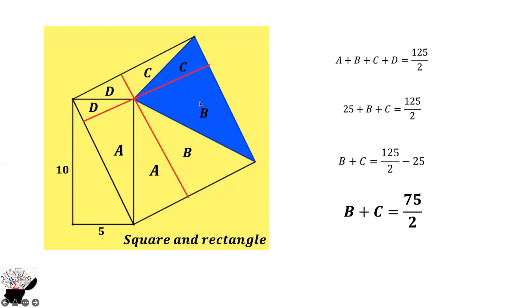So B + C = 75/2, and that is the answer — B + C is the area of the blue triangle. Thank you for watching, and you can always subscribe to my YouTube channel for more educational videos.